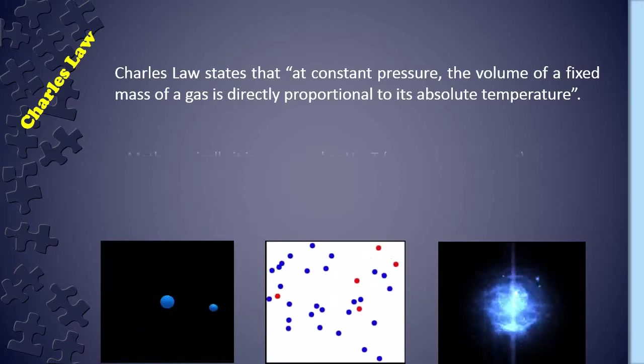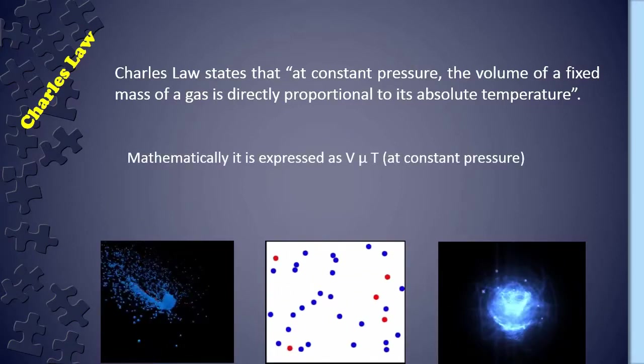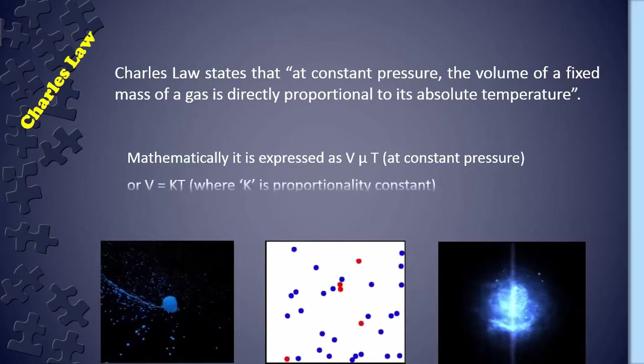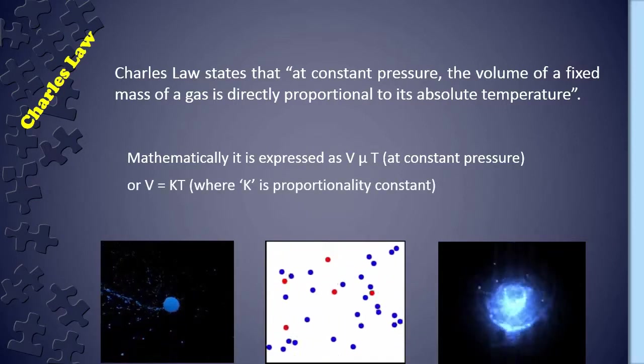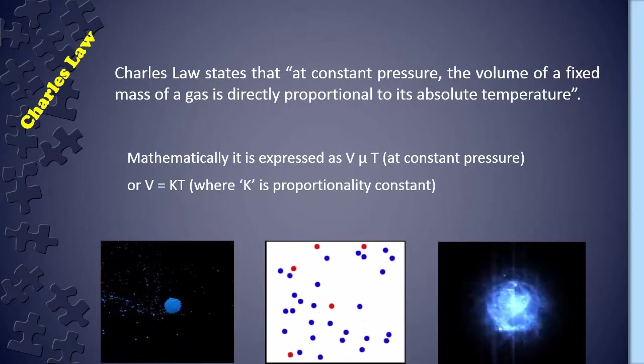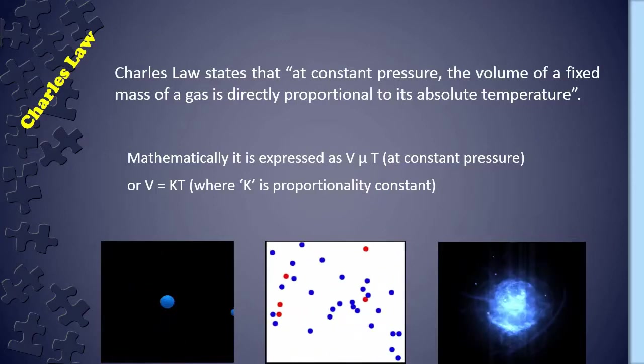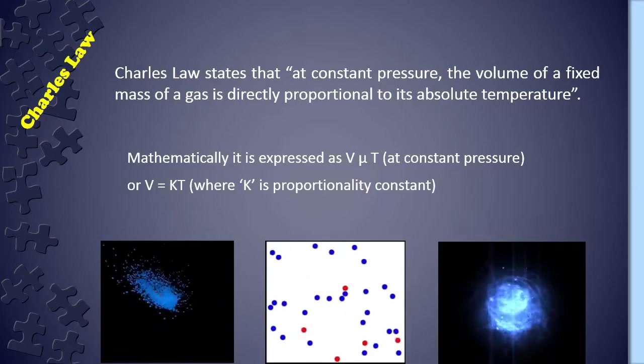Mathematically, it is expressed as V directly proportional to T at constant pressure, or V is equal to KT, where K is proportionality constant. According to Charles law, V1 is equal to KT1, or V1 by T1 is equal to K. Let us consider this equation as 1.